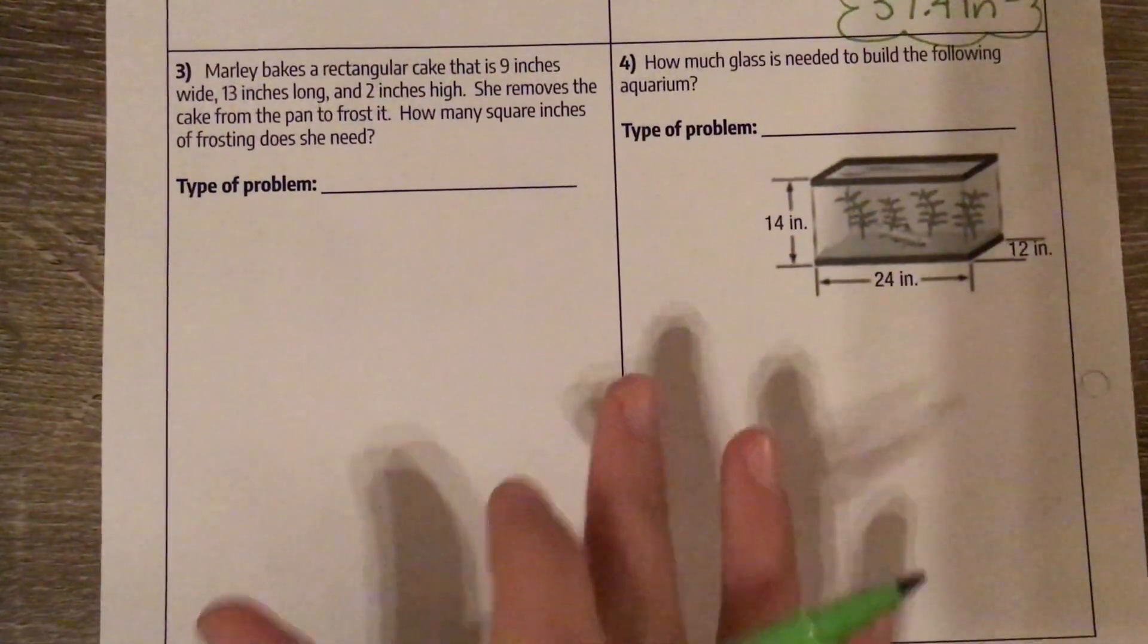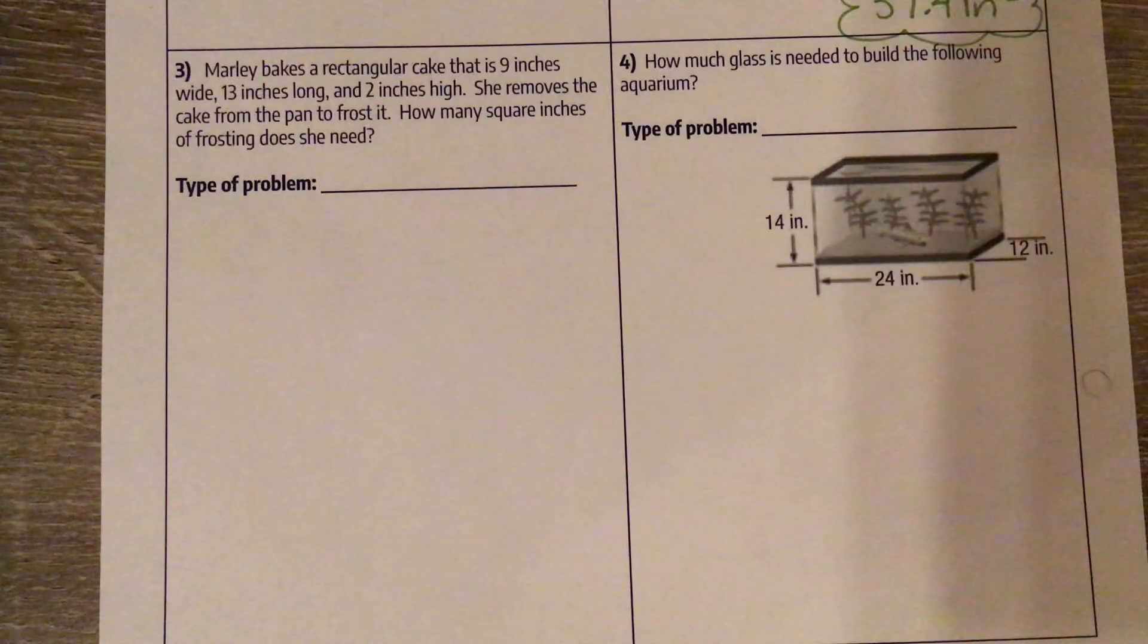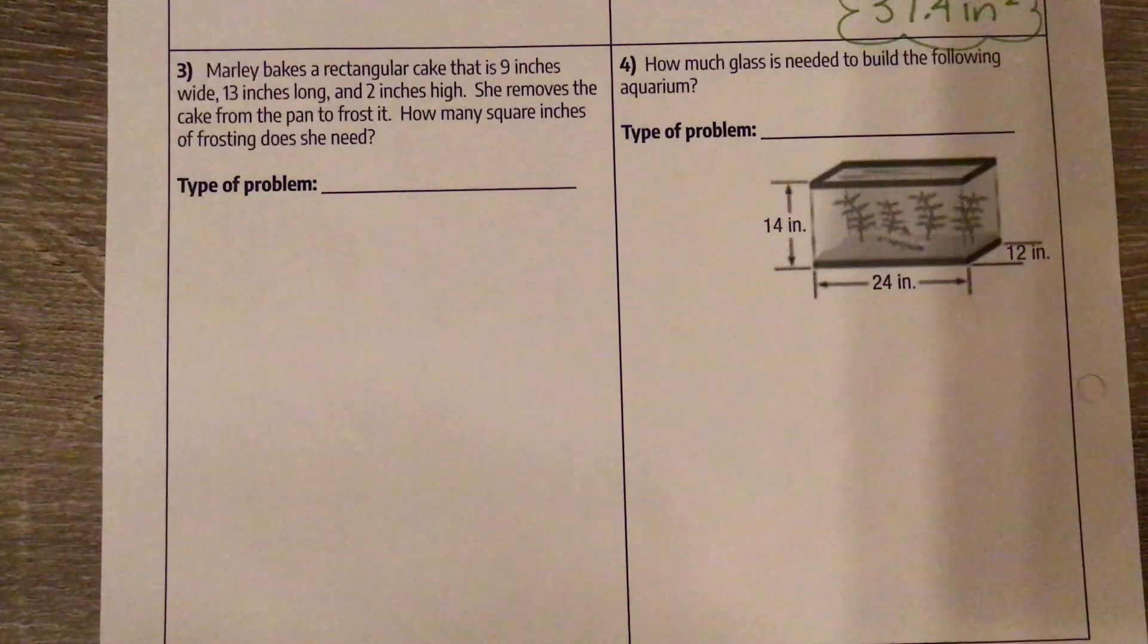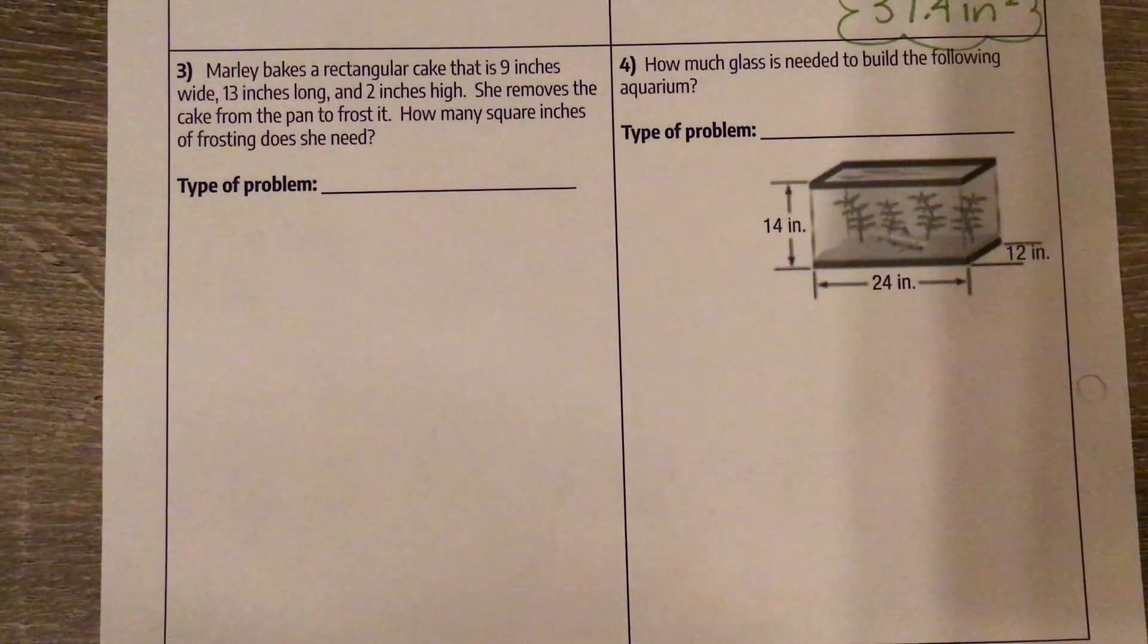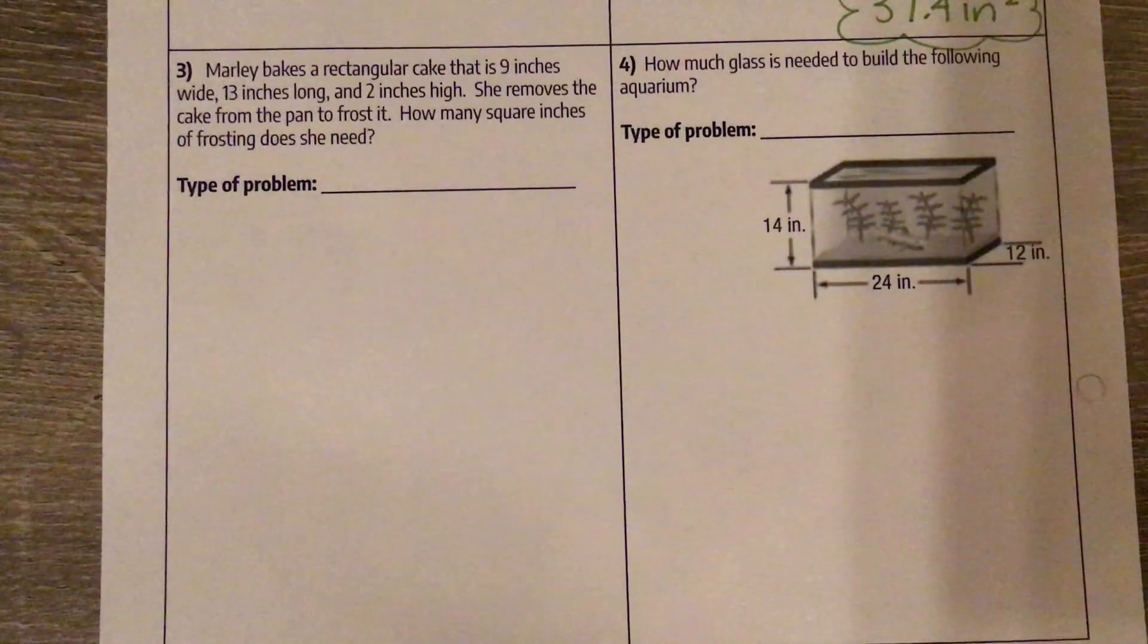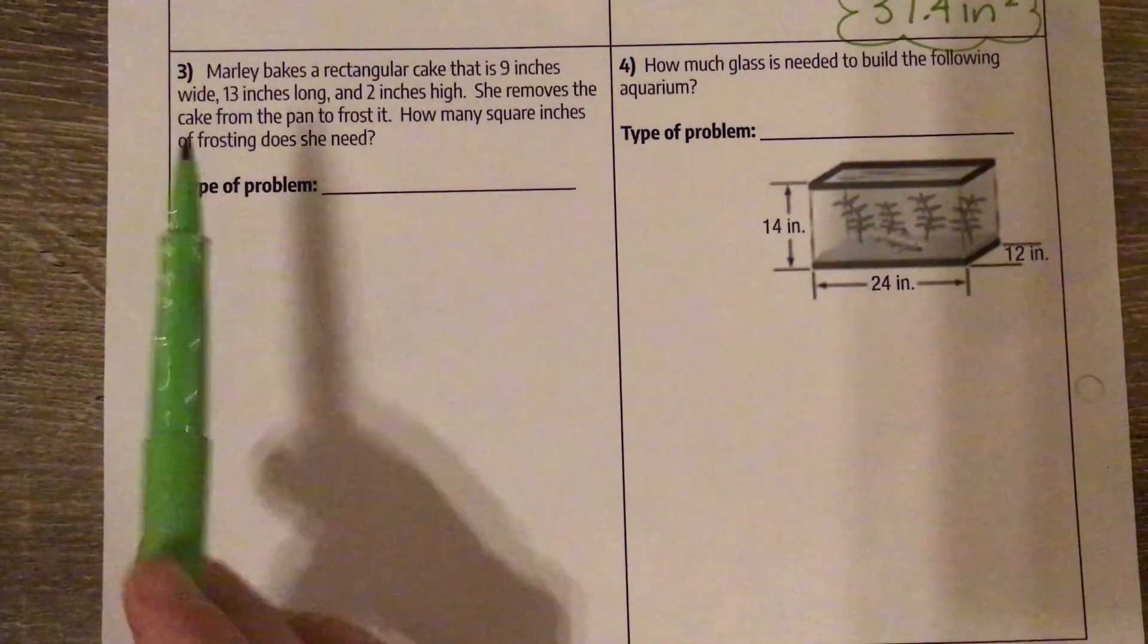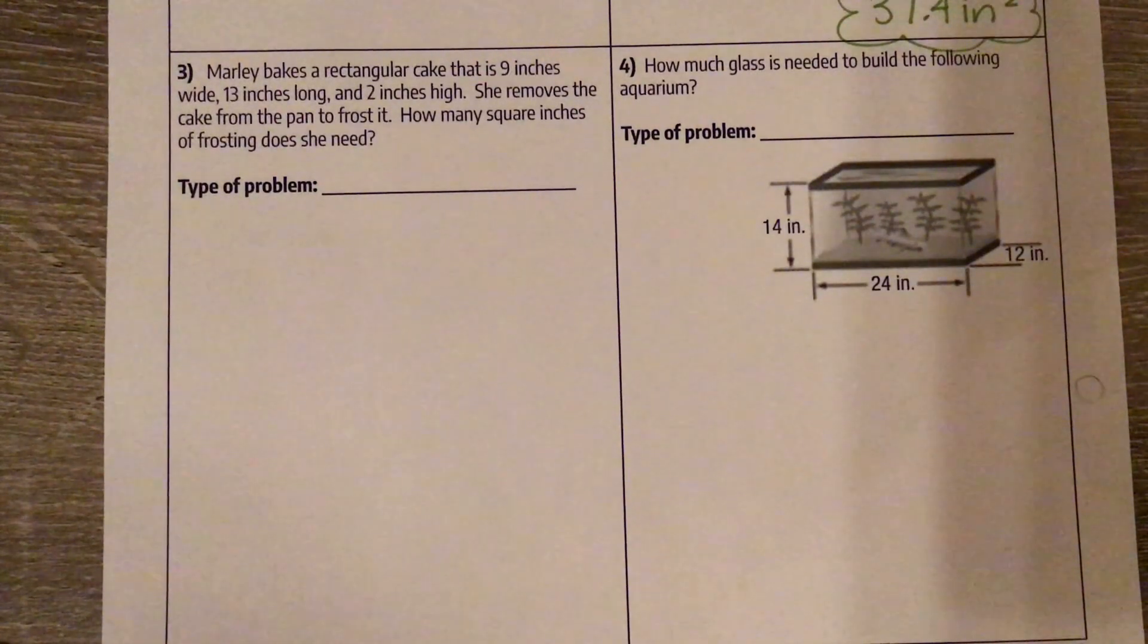Next one, number three. Marley bakes a rectangular cake that is 9 inches wide, 13 inches long, and 2 inches high. She removes the cake from the pan to frost it. How many square inches of frosting does she need? So here's what is important to think about: when you are baking a cake, do you frost the bottom? No.